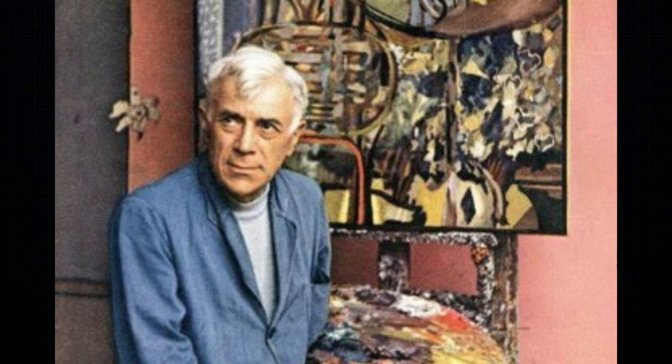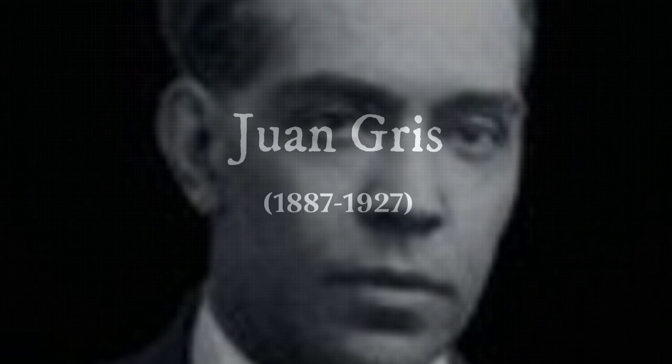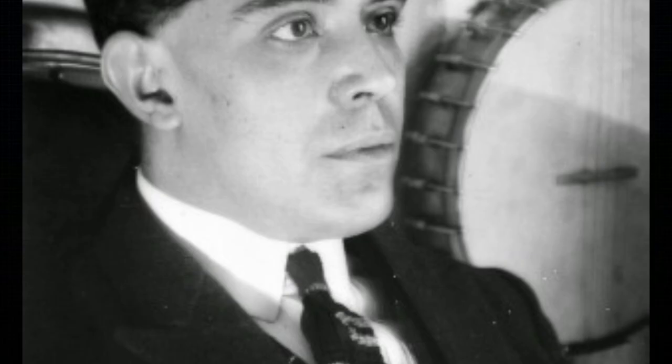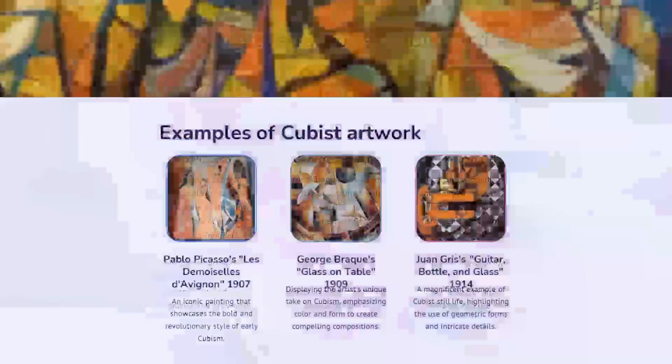Juan Gris, a Spanish painter and sculptor, was a prominent member of the Cubist movement and played a crucial role in the development of Analytic Cubism. Gris's artworks often featured still-life subjects and were marked by their intricate patterns and use of muted colors, reflecting his interest in the subtle nuances of light and form.